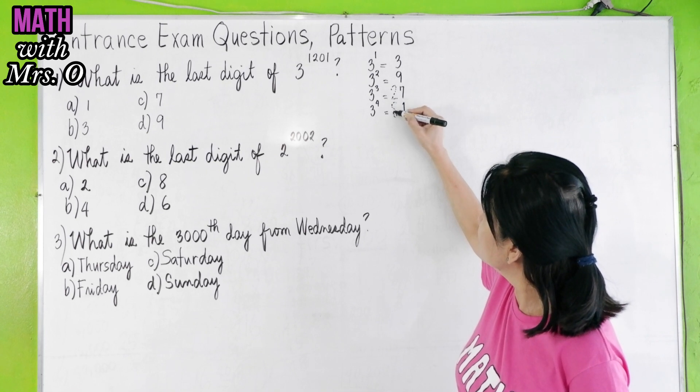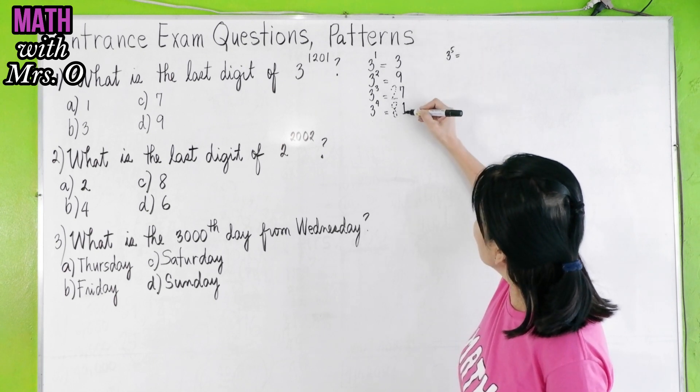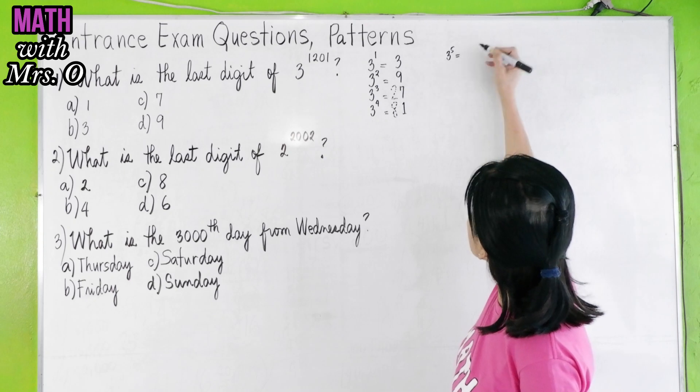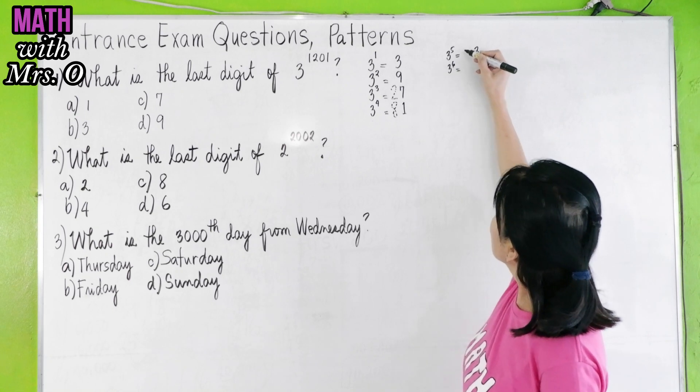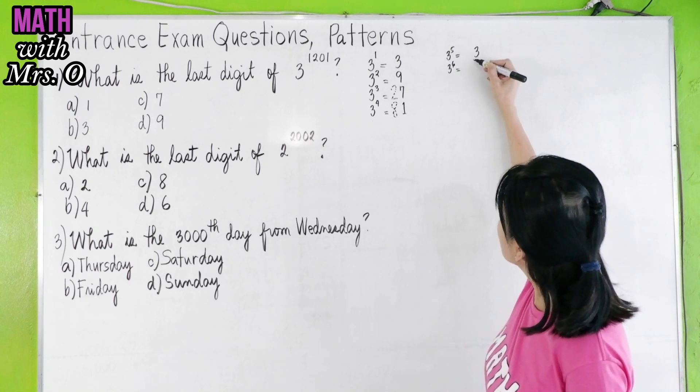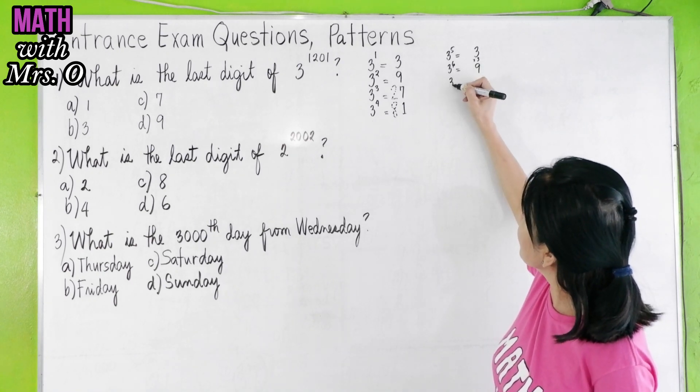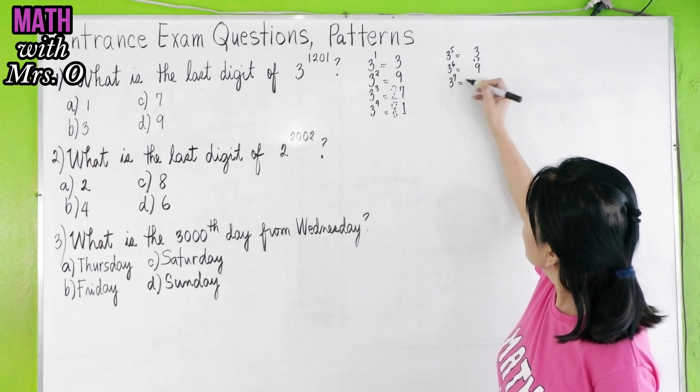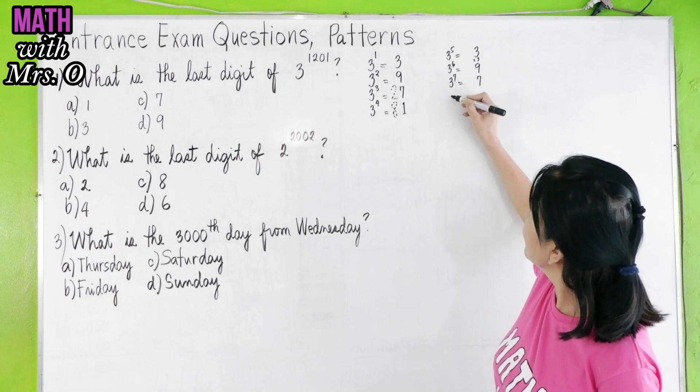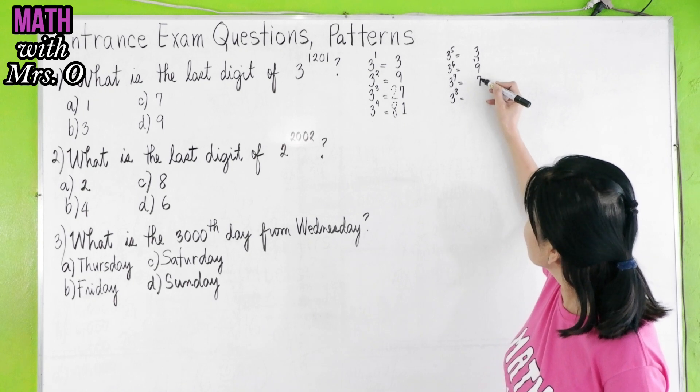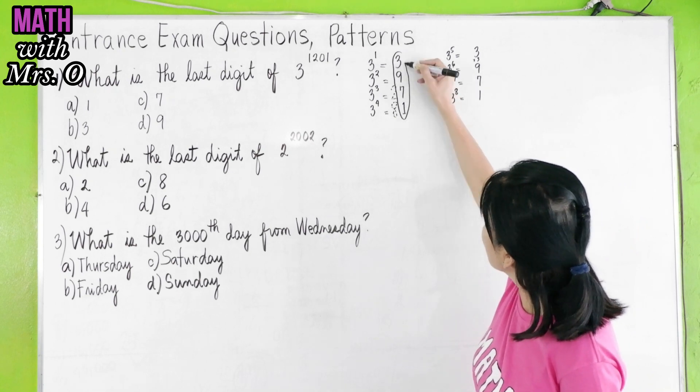If we continue, 3 to the 5th, 81 times 3, 1 times 3 is 3. It's actually 243. 3 to the 6th, 243 times 3, will give you a last digit of 9. 3 to the 7th, 9 times 3 is 27, carry 2, so the last digit is 7. 3 to the 8th times 3, 7 times 3 is 21, carry 2. So you can see that there is a pattern.